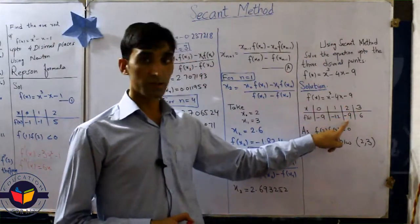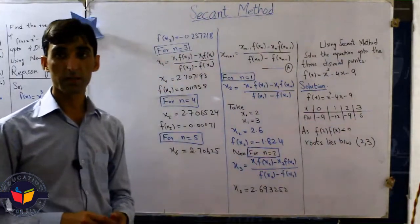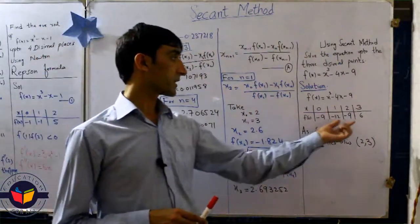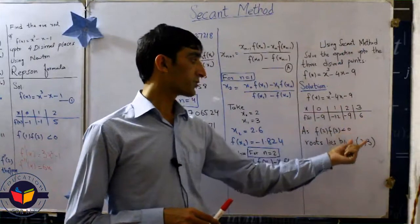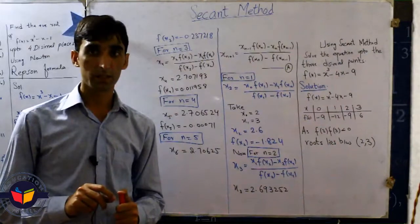At 2 the function gives us the value minus 9. At 3 the function gives us the value 6. That means the function changed sign at the interval 2 and 3. It means our solution is between 2 and 3.